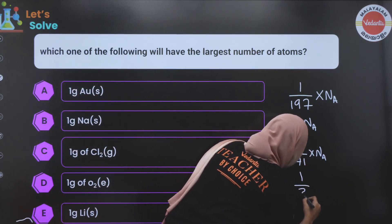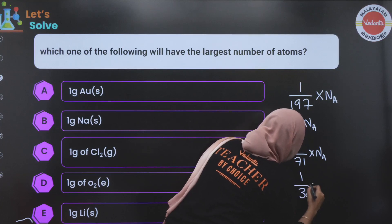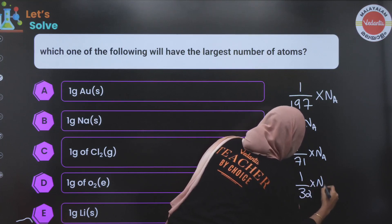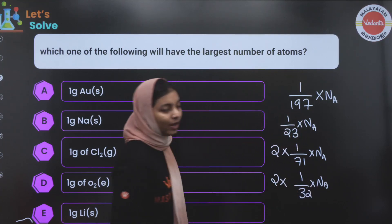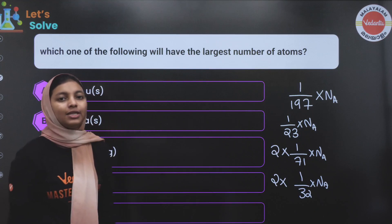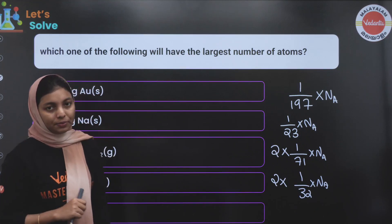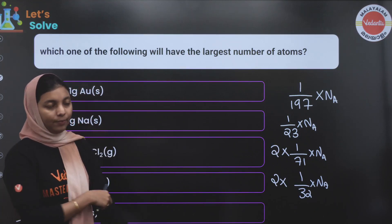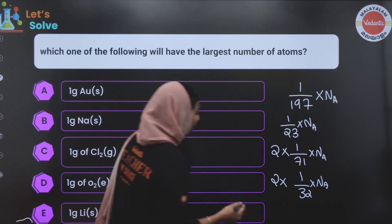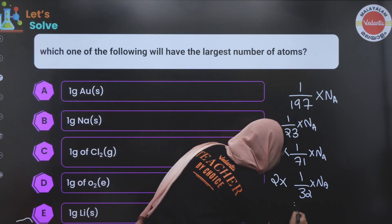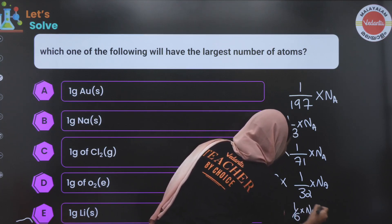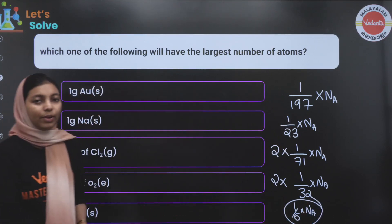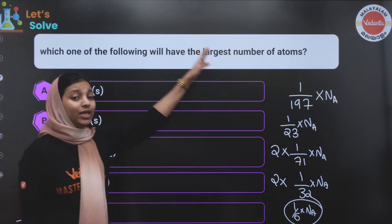For oxygen molecule (O₂): 1 by 32 into Avogadro's number, then multiply by 2 for atoms, since oxygen is a diatomic molecule. For 1 gram of lithium: 1 by 6 into Avogadro's number gives the number of atoms. Lithium has the smallest atomic mass, so 1 gram of lithium gives the largest number of atoms.